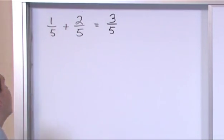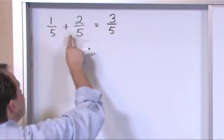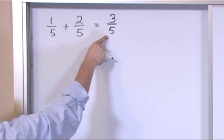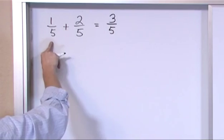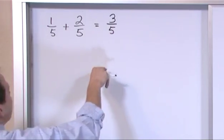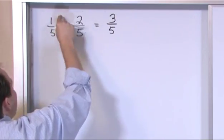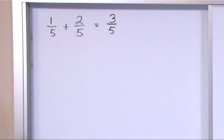So when you're adding fractions, the denominator of the new fraction you get is always going to be the same as what you started with. Five, five, so this one's going to be five. In the numerator, all you do is add together the numerators. One plus two is three.